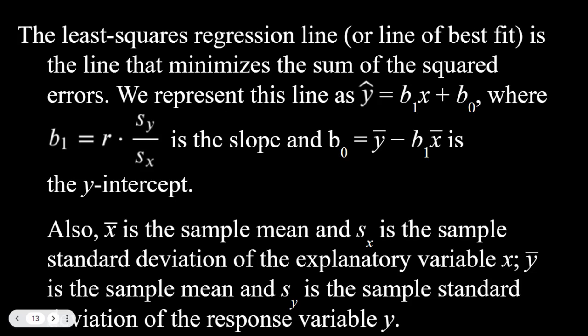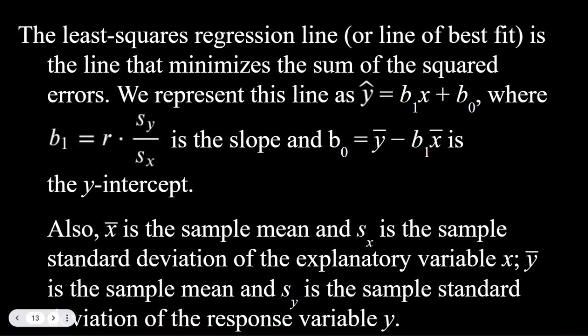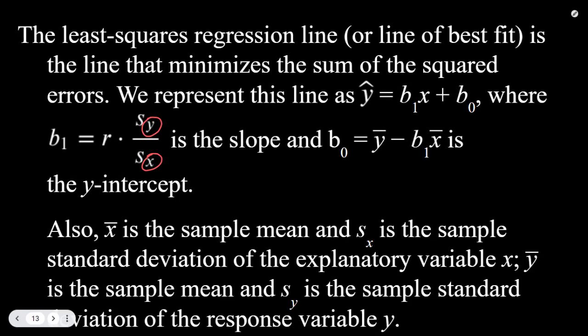Remember, x̄ is the sample mean, and sₓ is the sample standard deviation of the explanatory variable x. ȳ is the sample mean, and sᵧ is the sample standard deviation of the response variable y. The subscripts just tell us which variable we're dealing with. We've known for a while that s is the sample standard deviation, and the x̄ and ȳ notation works for both variables.